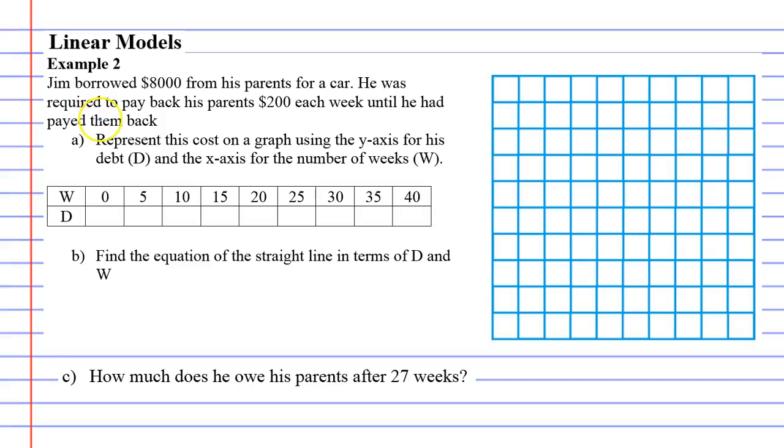Example 2. Now Jim has borrowed $8,000 from his parents for a car and he's required to pay back his parents $200 each week until he has paid them back. So question A says represent this cost on a graph using the y-axis for his debt and the x-axis for the number of weeks.